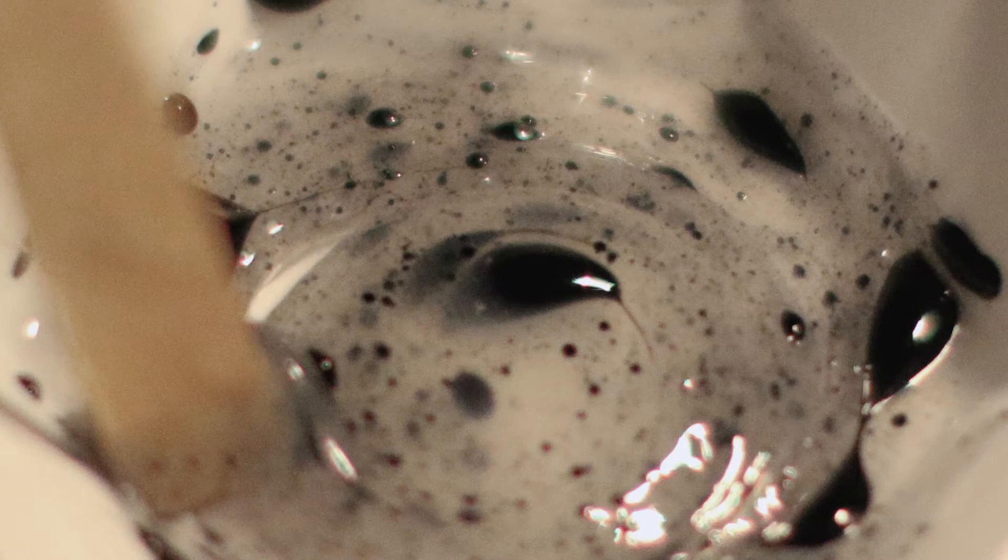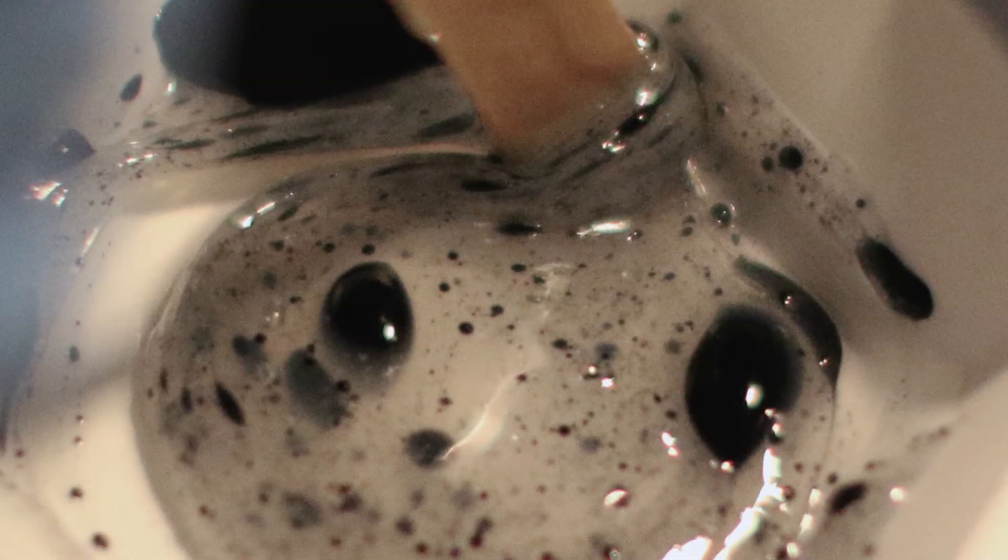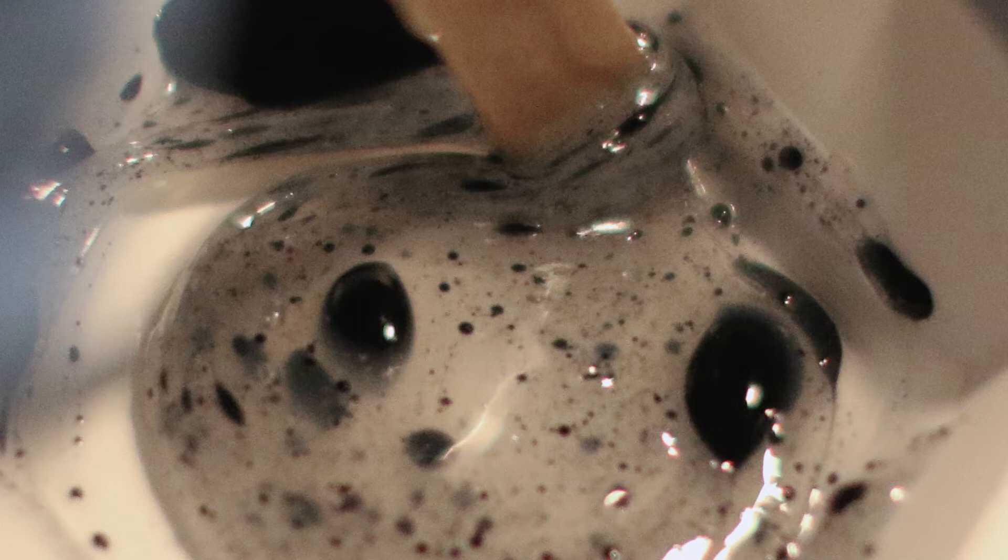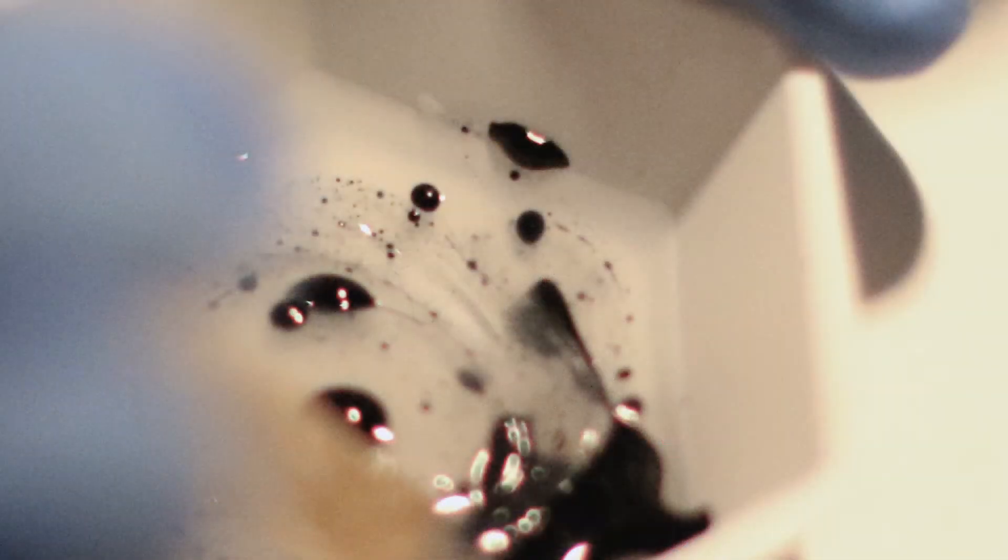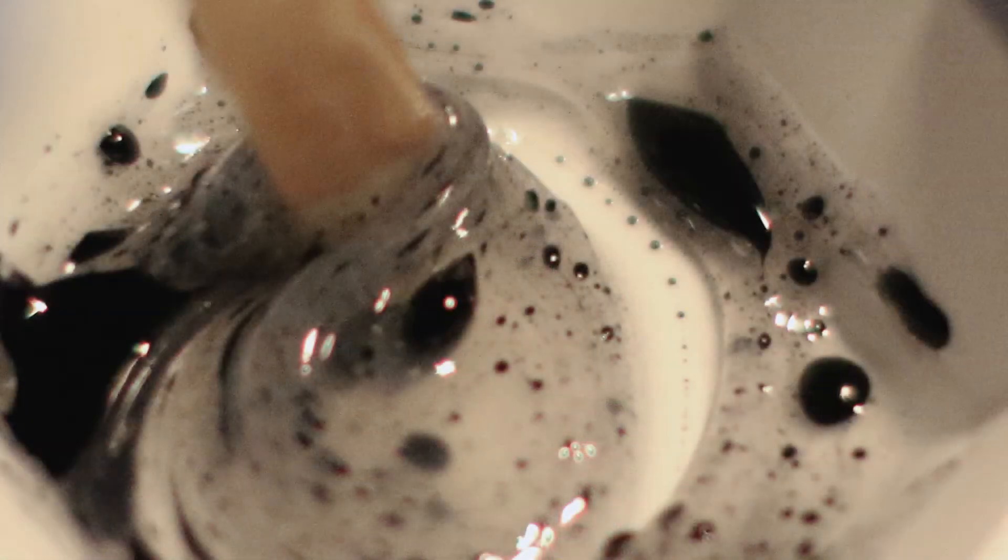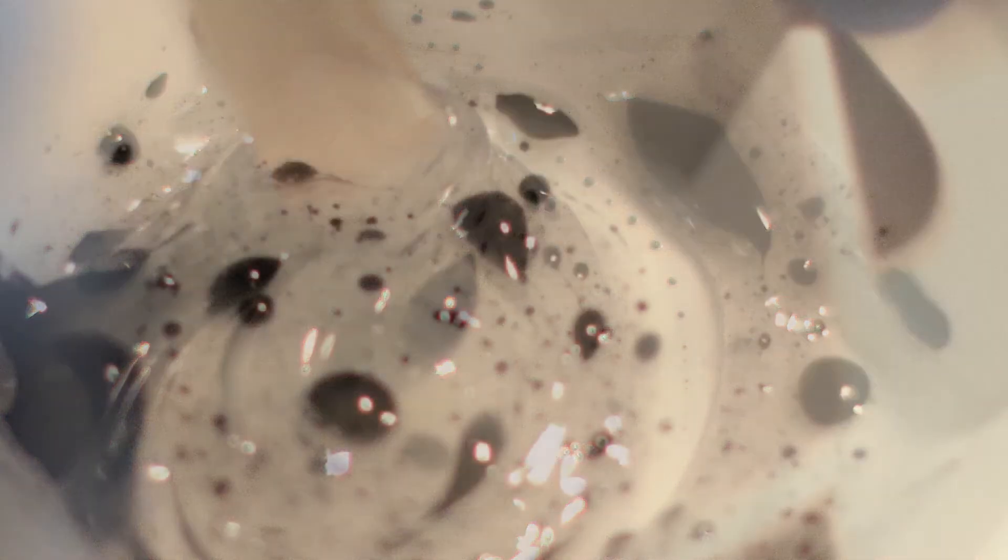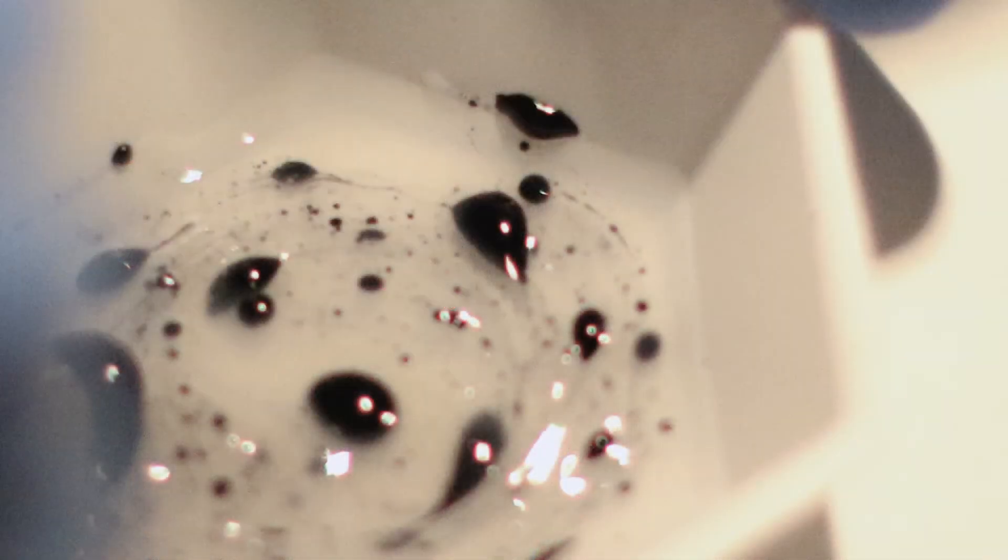The Dutch fashion designer Iris van Herpen is well known for using technology with traditional haute couture craftsmanship. In her work Splash, she used two colors of water to find the shape and direction of the water, clear and black. These two colors mixing in action inspired my design process.